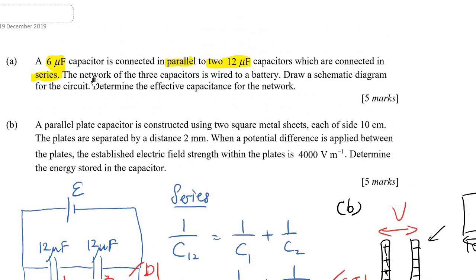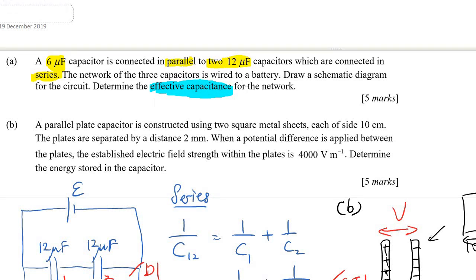And then the network of the 3 capacitors via the battery. Draw a schematic diagram for the circuit. Determine the effective capacitance. You want to find the effective capacitance for the network. This question has 5 marks.